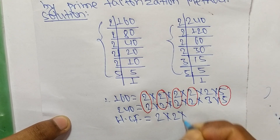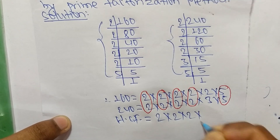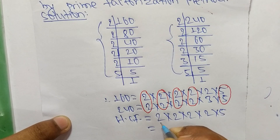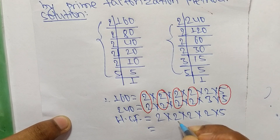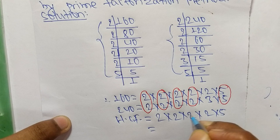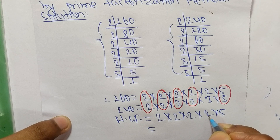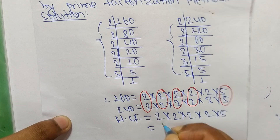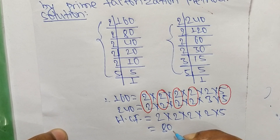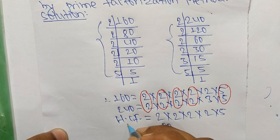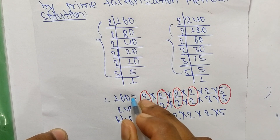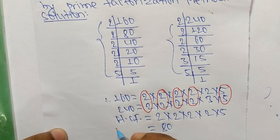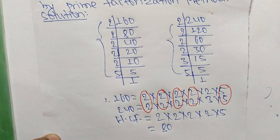So HCF = 2 × 2 × 2 × 2 × 5. That gives us 4, then 8, then 16, and 16 × 5 = 80. So 80 is the HCF of 160 and 240. Thanks for watching.